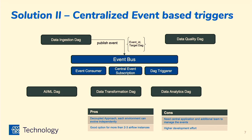In this model, an ingestion DAG publishes an event when it completes a job. That event has key details like a unique event ID, trigger DAG ID, and target DAG ID. For the trigger pattern, the event is taken up by the event consumer, which processes and deduplicates it, then passes it to the DAG trigger component. Since there's a target DAG ID, it knows exactly which DAG to trigger — in our case, the data quality DAG — and hits the API.